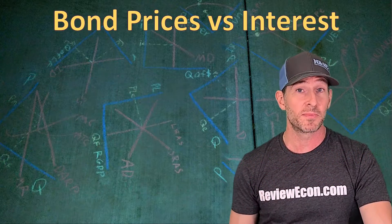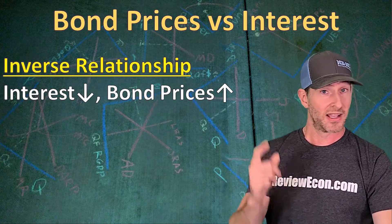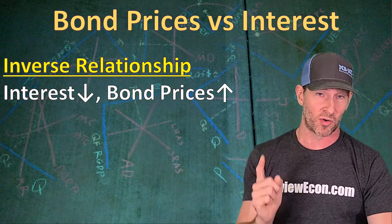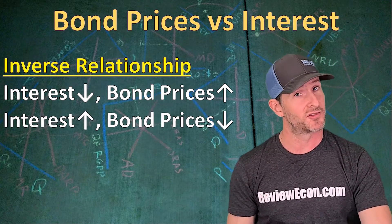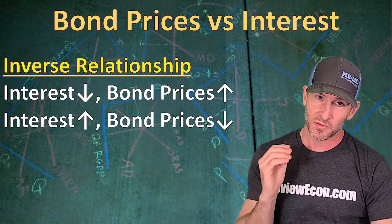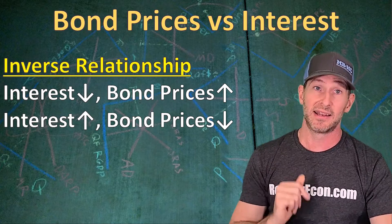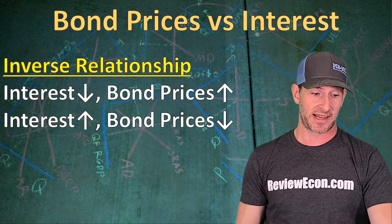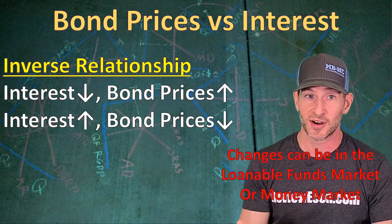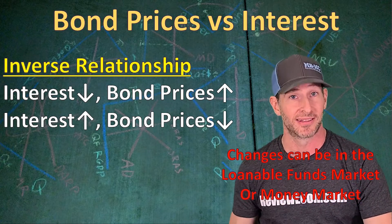In summary, there's going to be an inverse relationship between the interest rate and bond prices. If interest rates fall, bond prices are going to increase. And if interest rates increase, bond prices are going to fall. That is the relationship you're going to see over and over again in your AP macroeconomics exams. Those changes in interest rates can come from the loanable funds market or the money market that you will learn about later in this class.